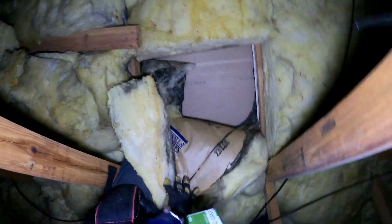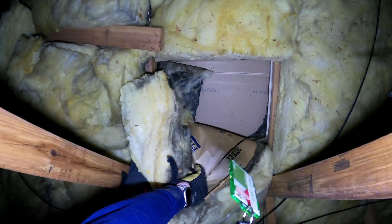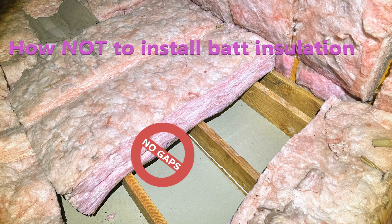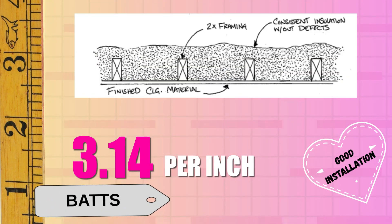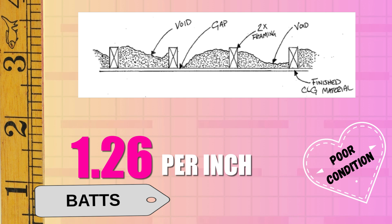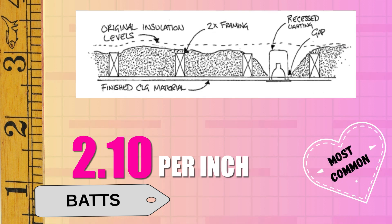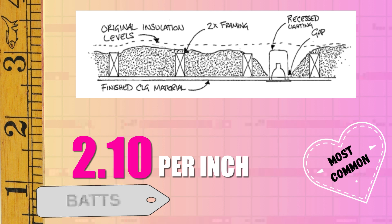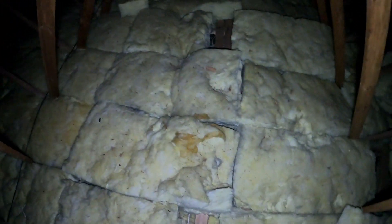Fiberglass batt insulation, famously marketed through Pink Panther commercials, features craft paper or aluminum foil backing on one side. While common, it requires meticulous installation as it is unforgiving of mistakes. New fiberglass batts provide 3.14 R-value per inch, but poor installation can significantly reduce effectiveness to as low as 1.26 R-value per inch. Most of the attics I visit with fiberglass batt insulation have an R-value of 2.1 per inch, so that is a safe number to use if you have moderate coverage, meaning the insulation is generally in good contact with the ceiling.